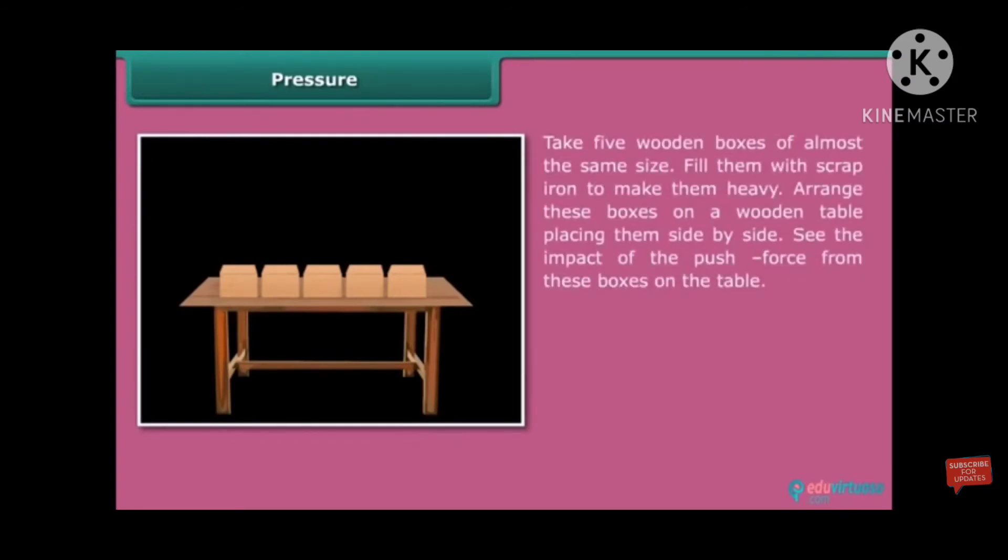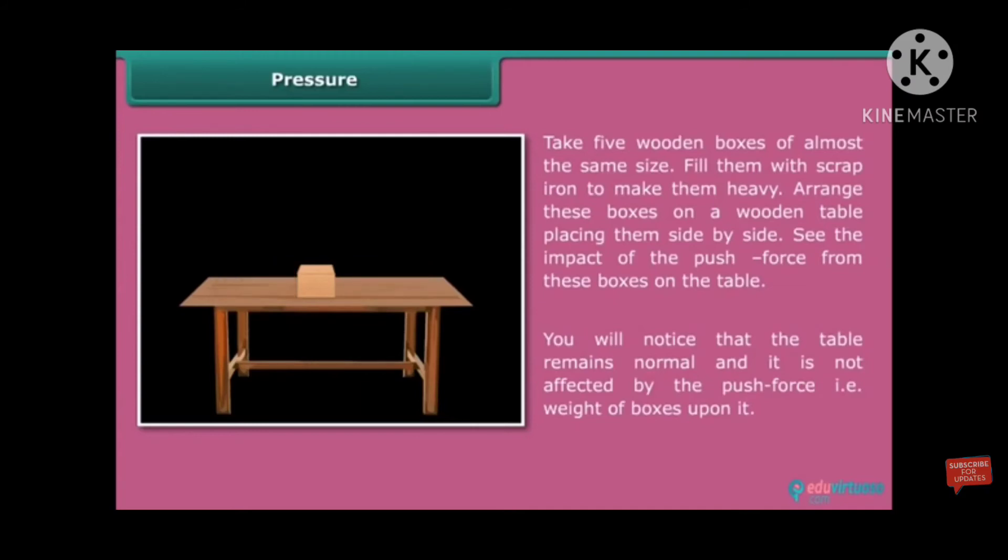Next one is pressure. Take five wooden boxes of almost the same size, fill them with scrap iron to make them heavy and arrange these boxes on a wooden table, placing them side by side. See the impact of the force from these boxes on the table. You will notice that the table remains the same and it is not affected by the push force, that is not affected by the pressure, which is called the weight of the box upon it.